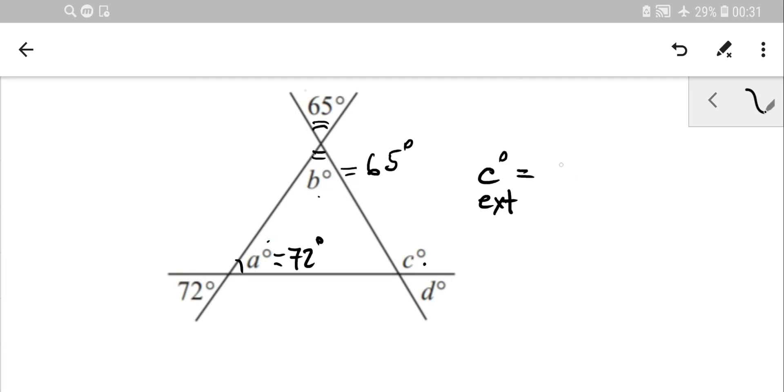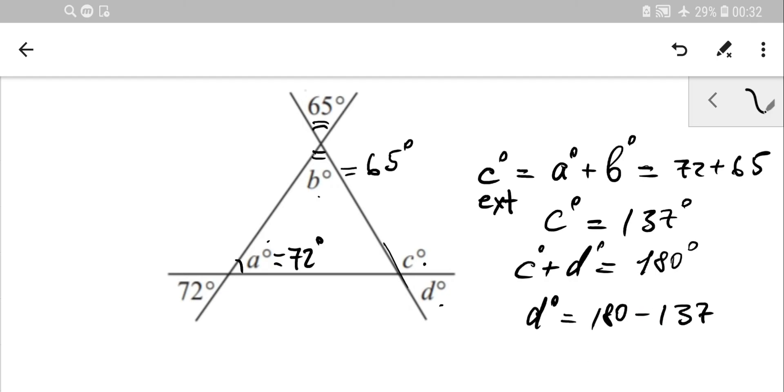A equals two opposite interior angles, so it turns out to be 72 plus 65. So angle C is 137. And angle D: this is a straight angle, so C and D being adjacent, basically the sum of those two angles is 180 degrees. So from there, angle D is simply 180 minus 137. In this case we can figure out the value, which is 43 degrees.